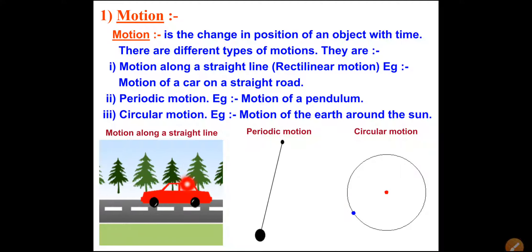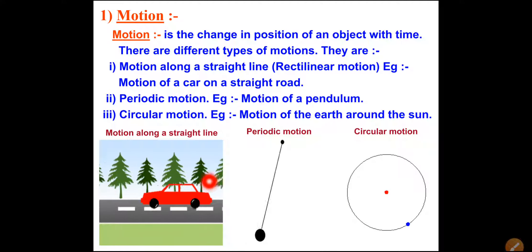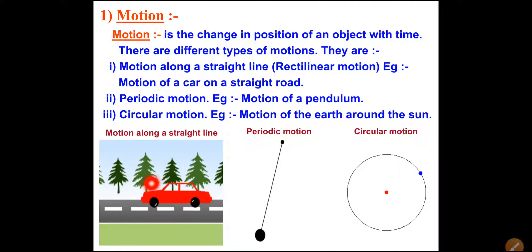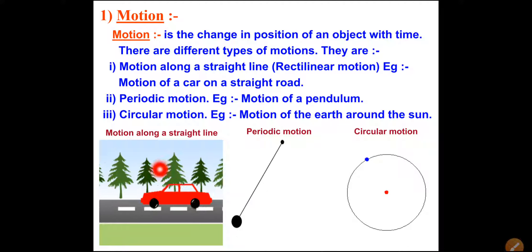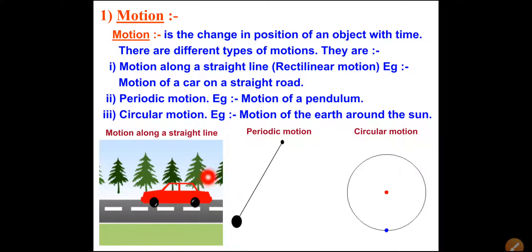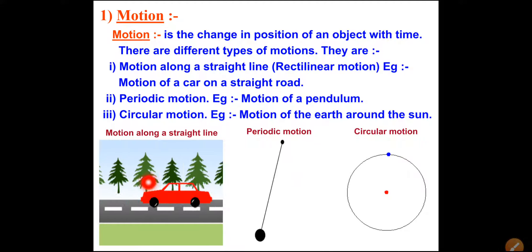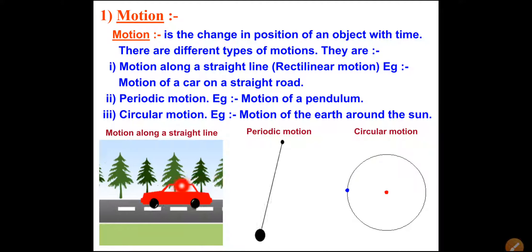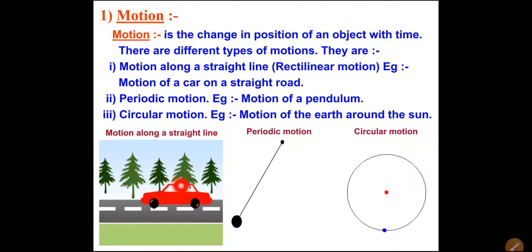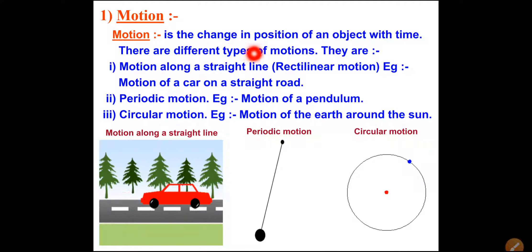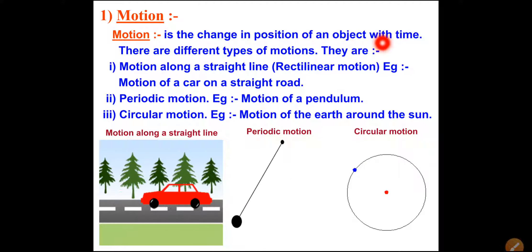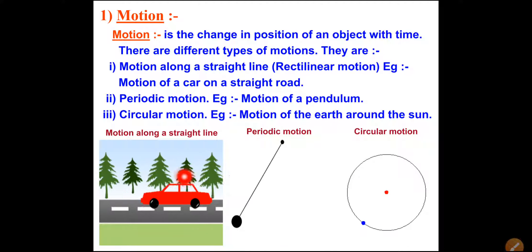The car is moving continuously, so with time the car's position also gets changed. In one minute the car can cover one kilometer distance, in two minutes it can cover more than one kilometer, and in the third minute the car will cover even more distance. So if there is a change in the position of an object with time, then that object is said to be in motion.